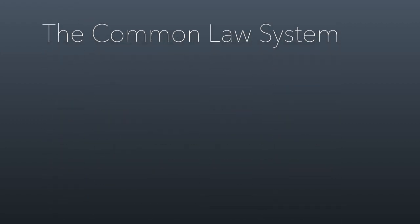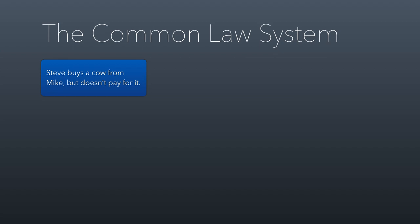Now we need to talk about how law is created in the United States. There are actually two or three ways that law is created. A lot of our law comes through what's called a common law system. Common law goes way back — it's older than the United States, actually, because we imported a lot of common law from Great Britain when we organized ourselves as a separate country after the Revolution.